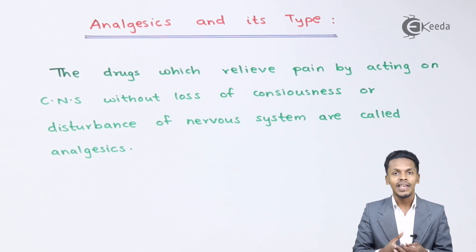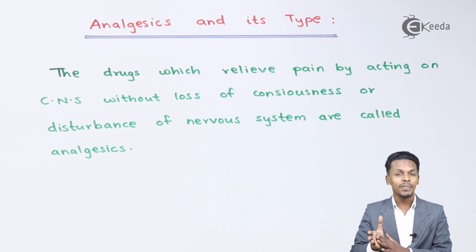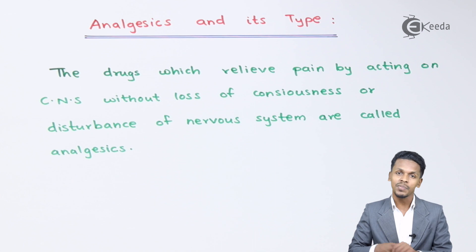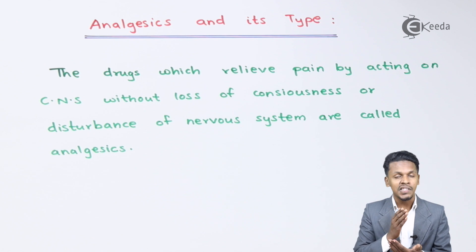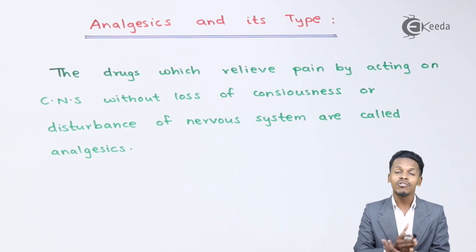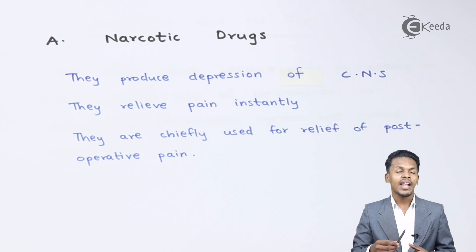By preventing those signals, we do not feel any kind of pain — that is how they act as pain killers. These pain killers are divided into two types depending on how effectively they act on the central nervous system. Those two types are narcotic drugs and non-narcotic drugs.